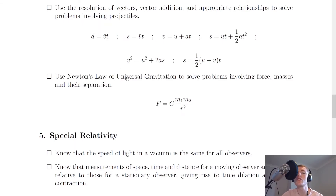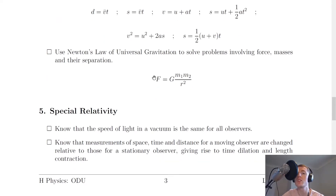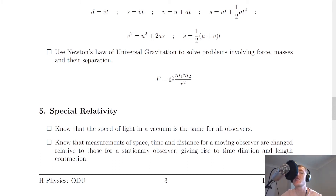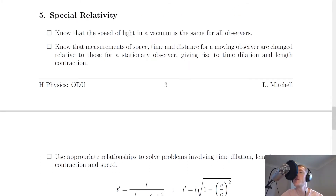Lastly for gravitation, it says to use Newton's law of universal gravitation to solve problems involving force, masses, and their separation. You need to use the equation F = G × m₁ × m₂ / r², where r is the distance between the centre of masses of the two objects, and G is the constant of gravitation, which takes the same value from the datasheet.